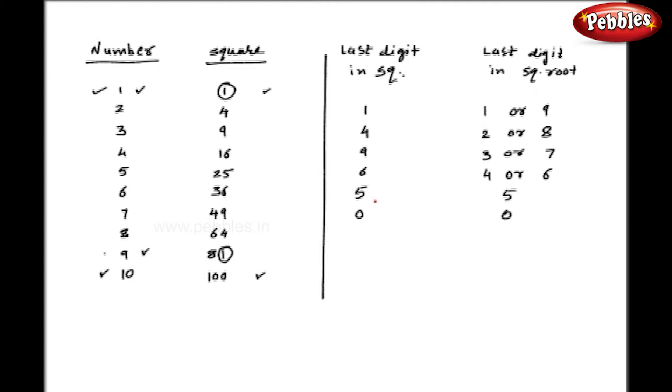When you have number 5 as last digit in square, we have only one number, that is 5 as a last digit in square root. And ultimately, if you have 0, the square root will have 0 as last digit.